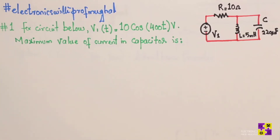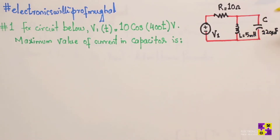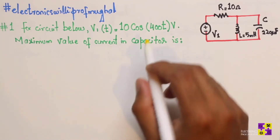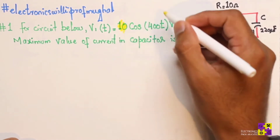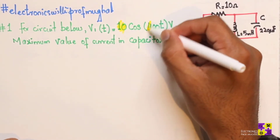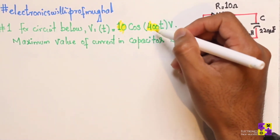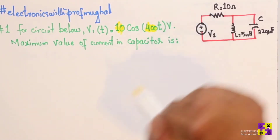Problem one says for the circuit below, v(t) equals 10 cosine of 400t volts. That's the magnitude, and we know this is 2πf which equals 400.